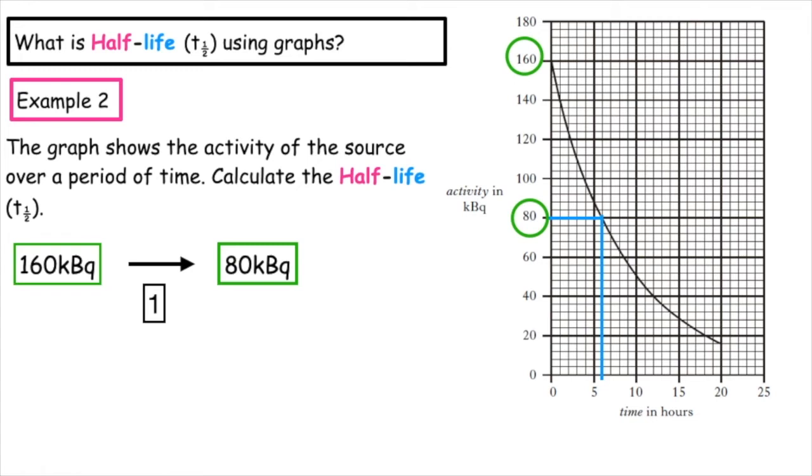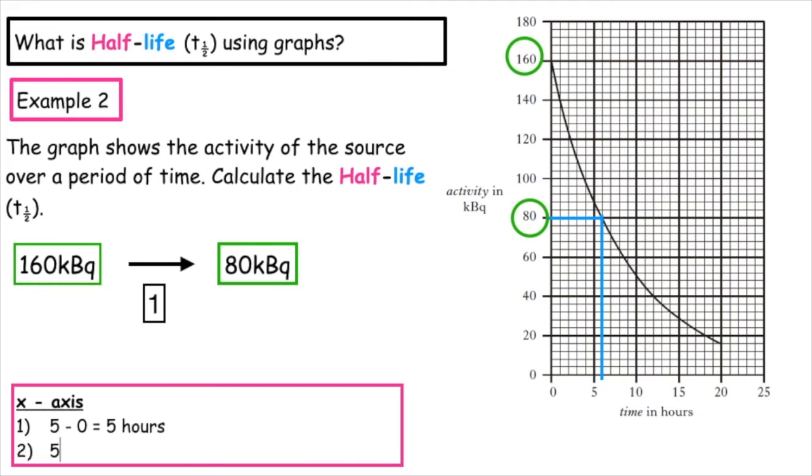What we have to work out is what each little box represents on the x-axis. So to do that, we take the first two numbers that are plotted on the x-axis, which are zero and five. Five minus zero equals five. We divide that by how many boxes are between those two numbers, which is five boxes. So that means that five hours divided by five boxes means each little box represents one hour.